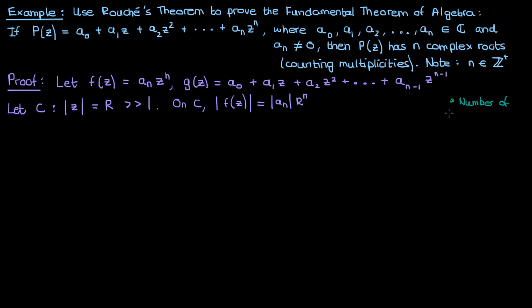The number of zeros of f(z) = a_n · z^n inside the contour C is n, counting multiplicity, because f(z) has one zero at z = 0 but that zero has multiplicity n since z is raised to the power n. Therefore the number of zeros of f(z) inside C is n.